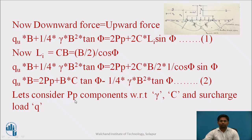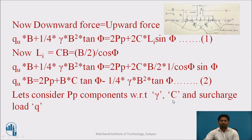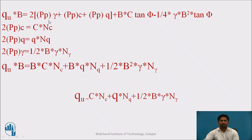Passive pressure results in three components: one due to the unit weight of soil, one due to the cohesion of soil, and one due to surcharge load Q. If we are considering the cohesion term, then unit weight of soil and surcharge load both become ignorable. If we are considering the gamma term, gamma is the unit weight of soil sample; while calculating surcharge or overburden pressure, Q equals gamma into Df. Therefore we must consider unit weight of soil sample and C becomes an ignorable quantity. So: qu·B = 2(PP_gamma + PP_cohesion + PP_surcharge) + B·C·tan phi − (1/4)·gamma·B²·tan phi.